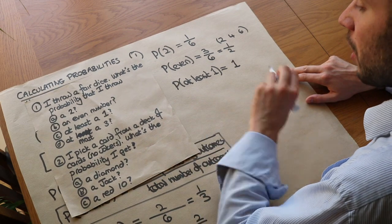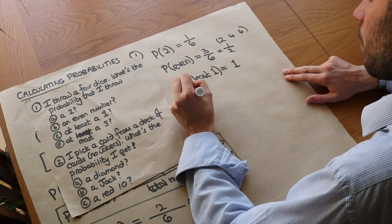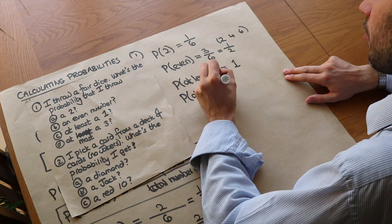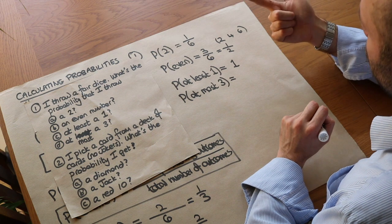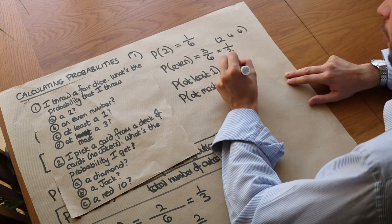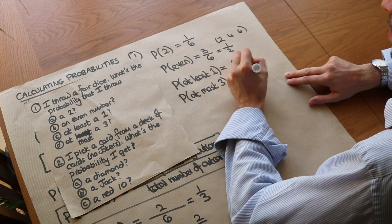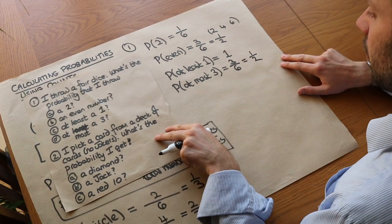And what about at most a three? Now at most three includes three itself. So we could get one, two or three. That's three out of the six times which we could simplify to a half.